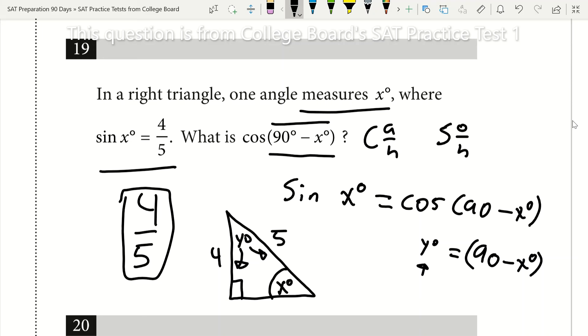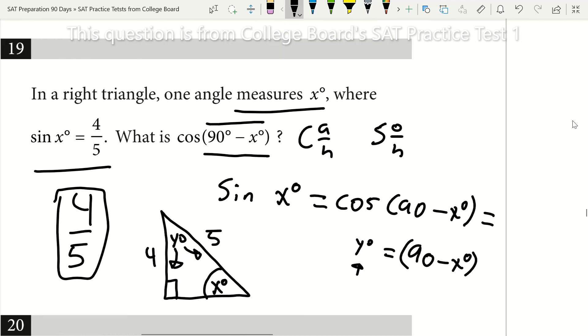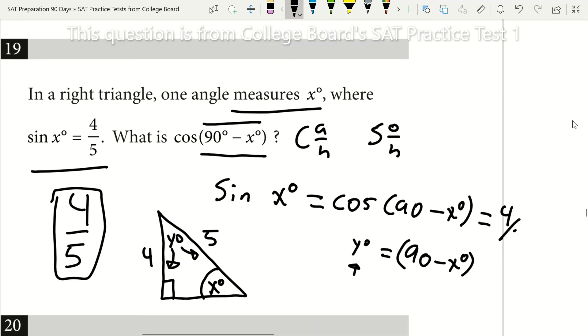So once again, the cosine of 90 minus angle x, or the cosine of y, must equal 4 over 5. So that shows you geometrically that the cosine of angle 90 minus angle x is equal to the sine of angle x.